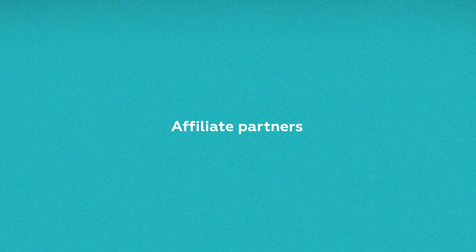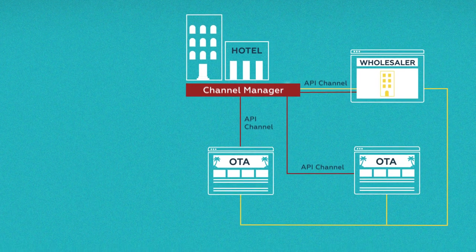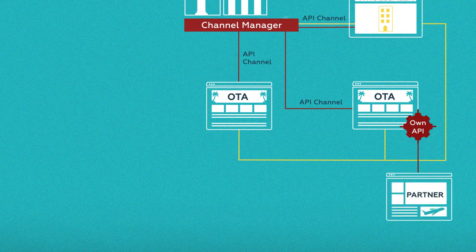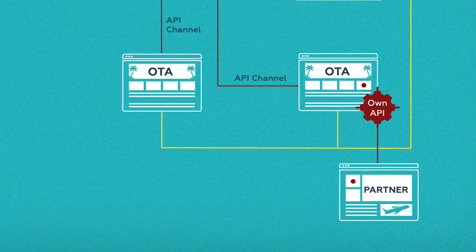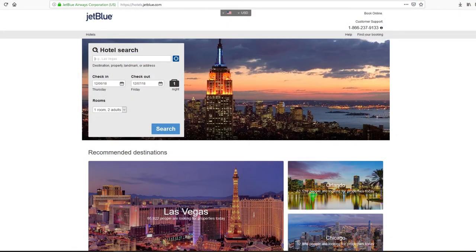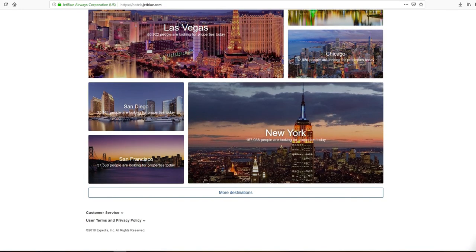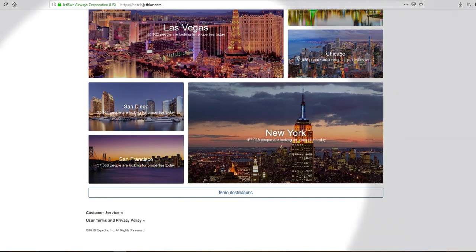Large online travel agencies such as Expedia or Booking.com build their own APIs to run affiliate programs. Smaller travel agencies or related businesses like airlines can use these APIs to sell hotel rooms from OTA inventory right on their sites and earn affiliate commissions. If you purchase flights at JetBlue and decide to book your room from JetBlue's website, know that their hotel booking is powered by Expedia.